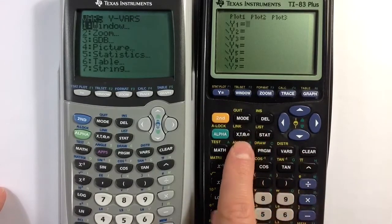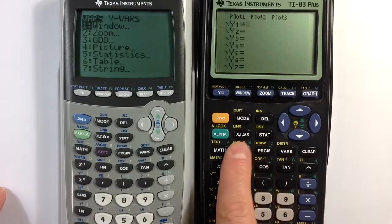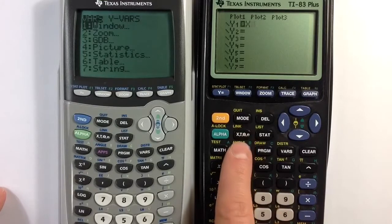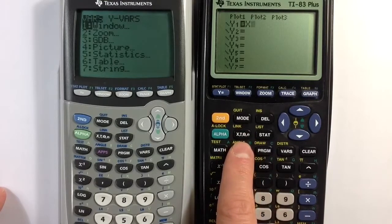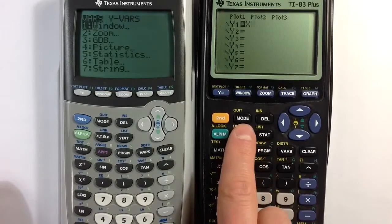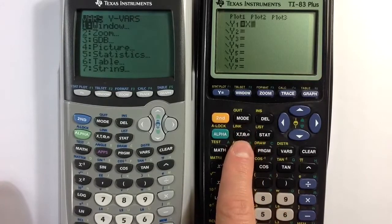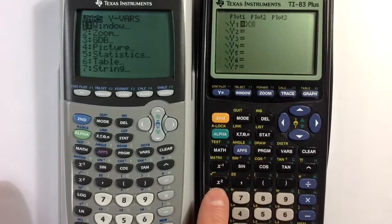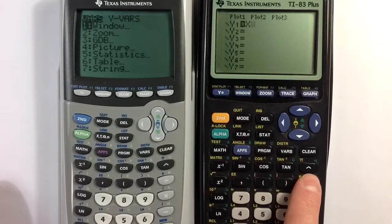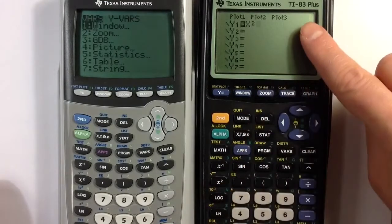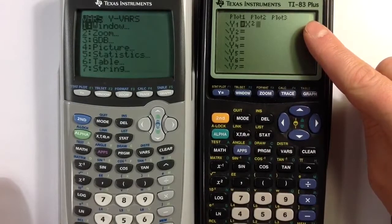And let me define the function x squared. So I can identify a variable using the variable key, and in function mode we'll see an x when we hit that key. The t, the theta, and the n relate to other modes that we could choose in the calculator. And if I want to define x squared, I can choose that x, and then there are a couple ways to do it. We can either use the exponent caret or we could just hit the square key. And so I've defined x squared to be the function y1.